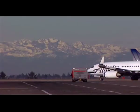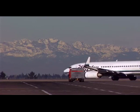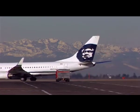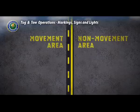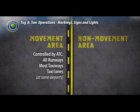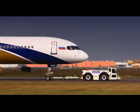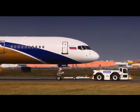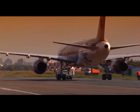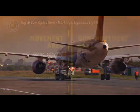There are two general zones at tower-controlled airports within which aircraft and ground vehicles will be located at any given time: movement areas and non-movement areas. Movement areas include all runways, most taxiways, and taxi lanes at some airports. You are never allowed to enter or move within these areas without air traffic control clearance.